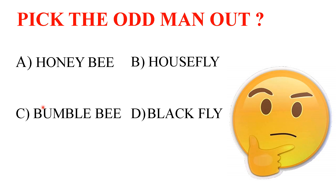I said this to my friends, and they suddenly said that option B is the answer — housefly is a vector for many diseases. But here you have to see option D, blackfly. It is also the vector of river blindness. Moreover, the honeybee and bumblebee belong to the same order Hymenoptera, and the housefly and blackfly belong to the same order Diptera. So what may be the answer?